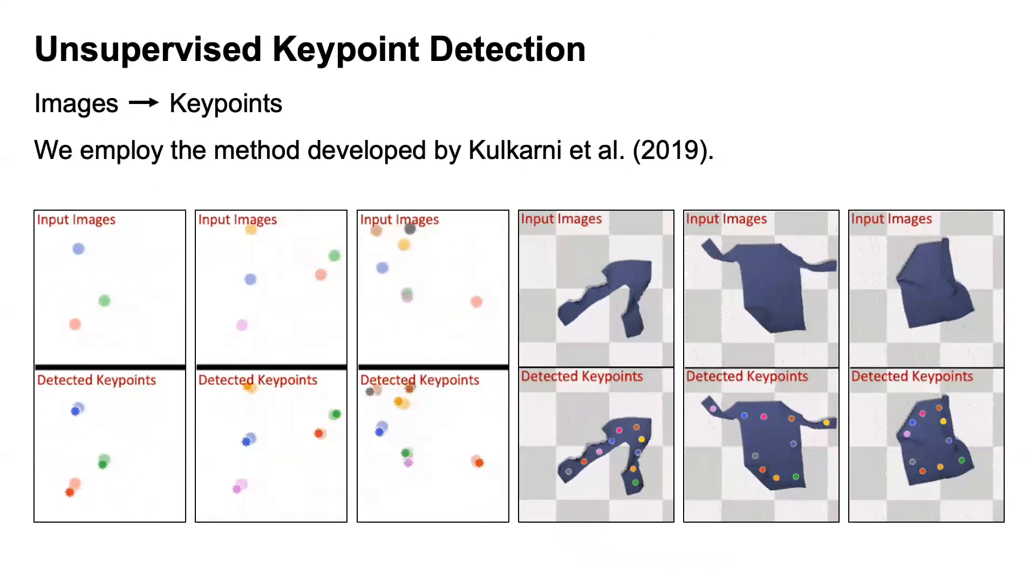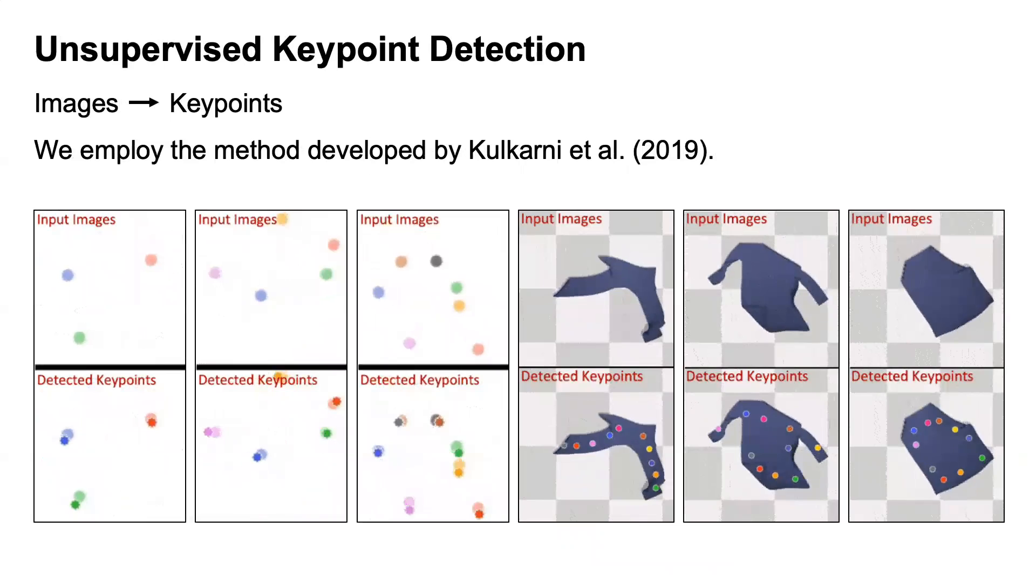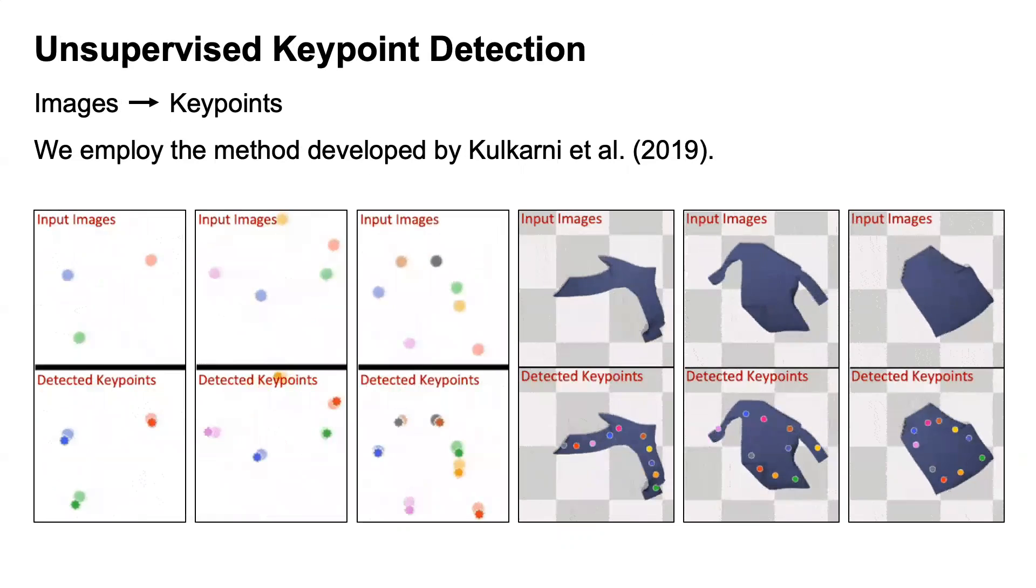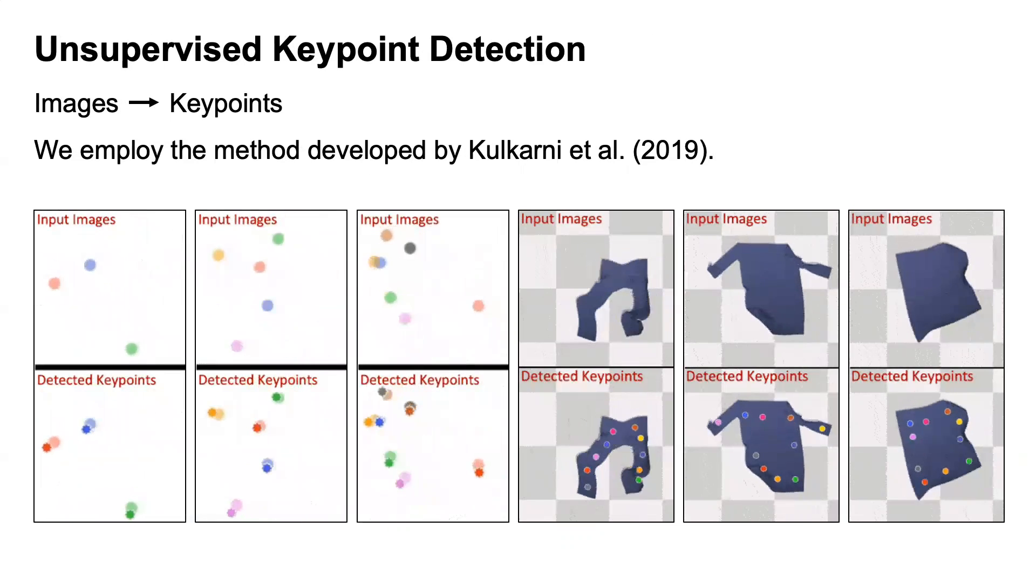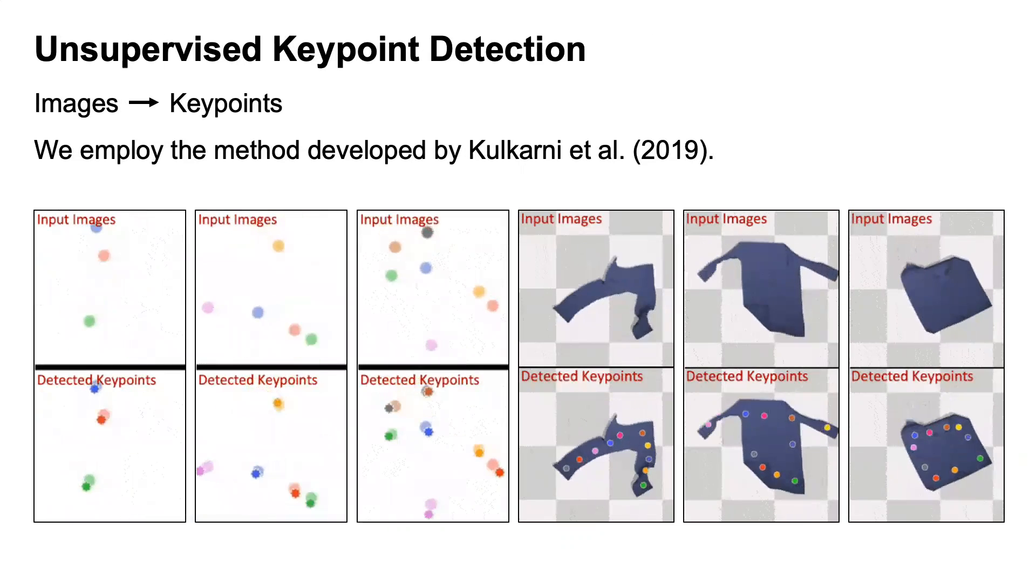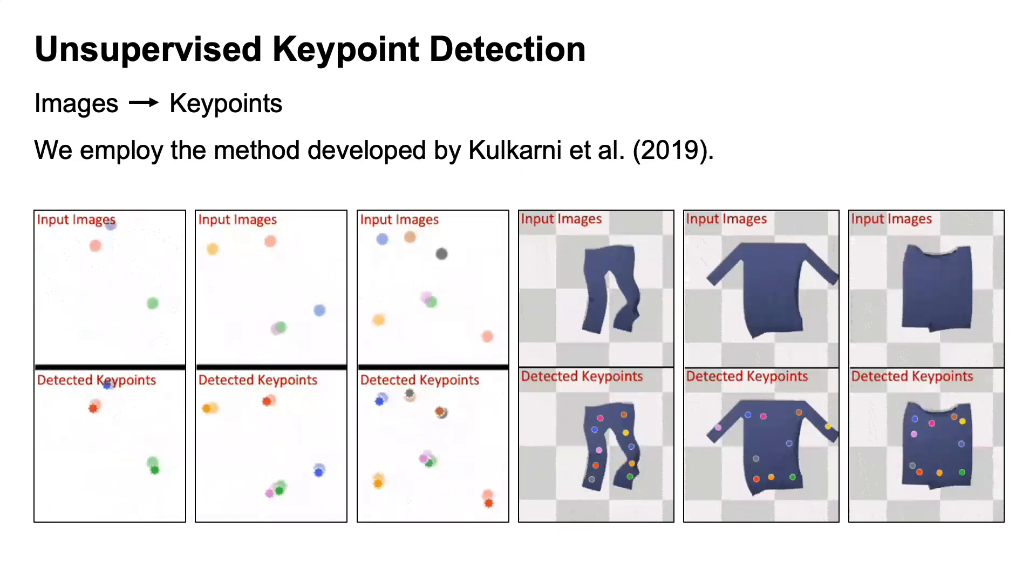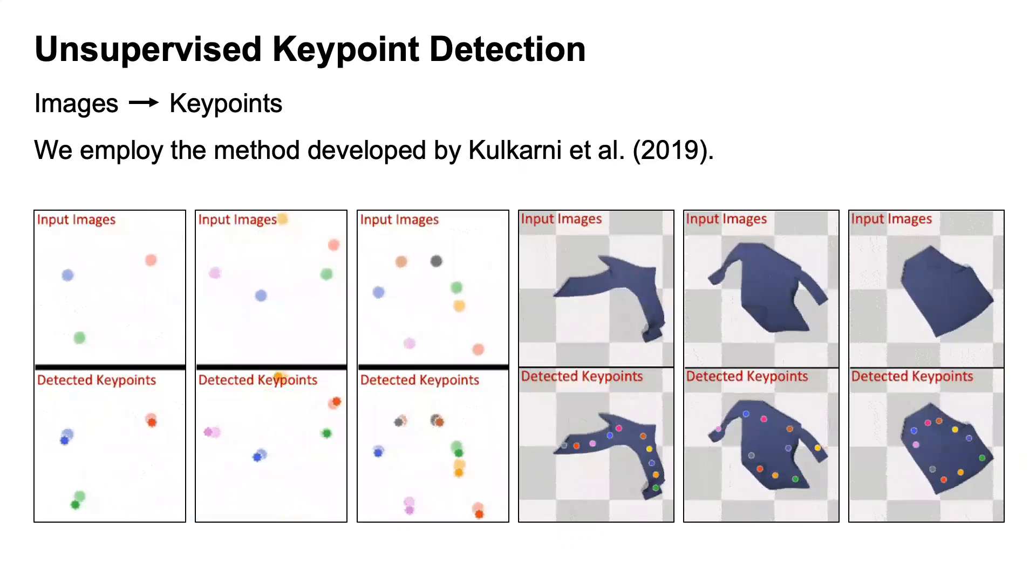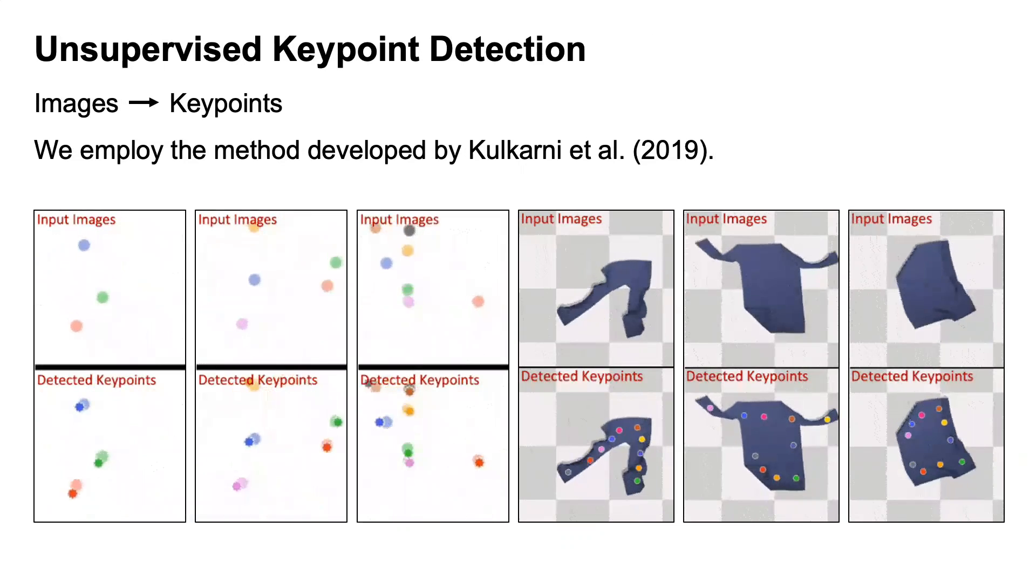Here, we show the experimental results. We employ the method developed by Lorenc et al. as our perception module that maps the images into a set of key points in an unsupervised way. As shown in the images, the perception module assigns key points over the objects and consistently tracks them over time across different frames.